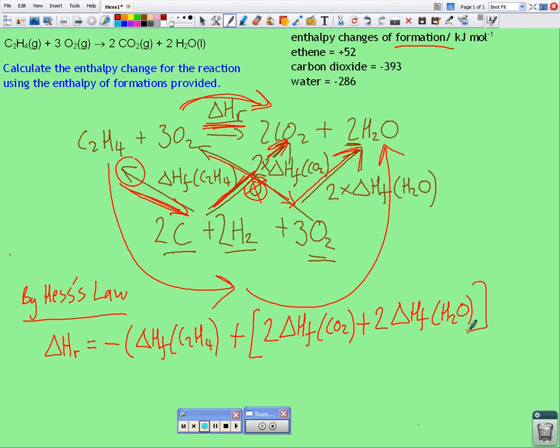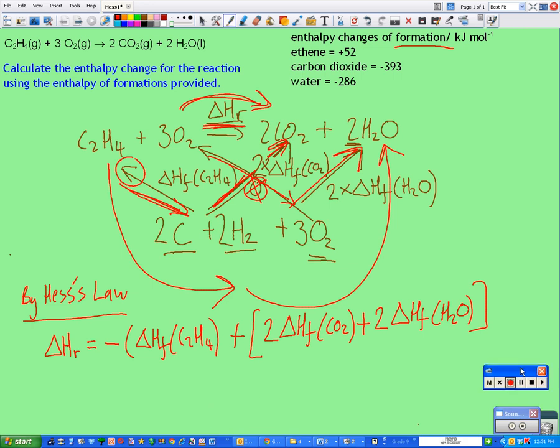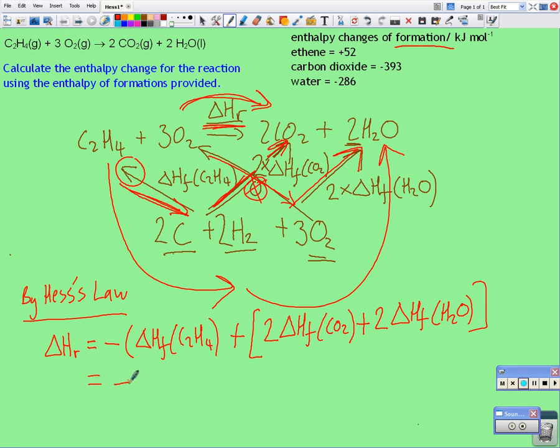So I've now got myself an equation with values I can use. Minus the enthalpy change of formation of ethene is up here, it's 52. Plus, from here, twice the enthalpy change of formation of carbon dioxide. So twice minus 393. Plus twice the enthalpy change of formation of water, which is given here. So that's plus twice negative 286.